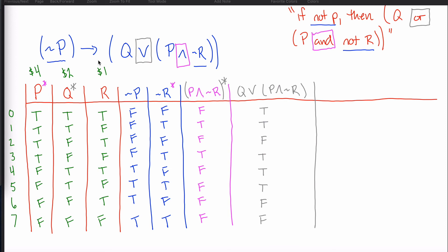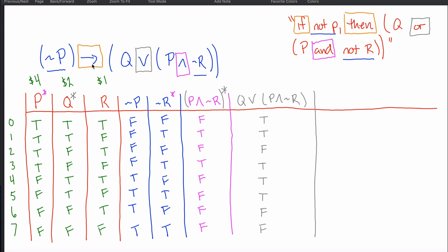Now I tackle the final conjunction — the arrow (if-then) — which connects not-P with everything in the parentheses, namely 'Q or (P and not-R)'. I'll be referencing the not-P column and the 'Q or (P and not-R)' column. The arrow is the trickiest rule — the if-then. Rather than go into too much theory, let me just explain how to handle it.